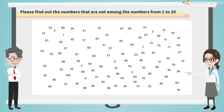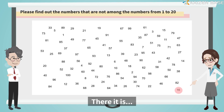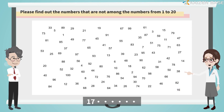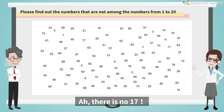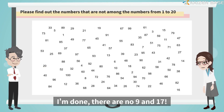10, 12, 13, 14, 15, 16 — there is no 16. Ah, there it is. 17 — there is no 17. There is no 17. 18, 20. I'm done — there are no 9 and 17.